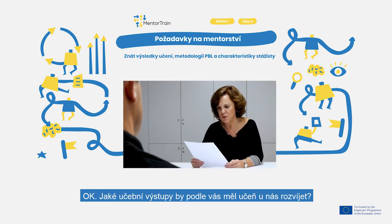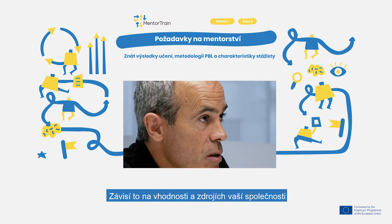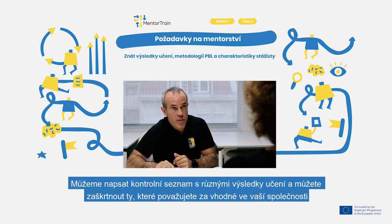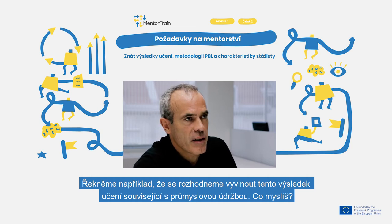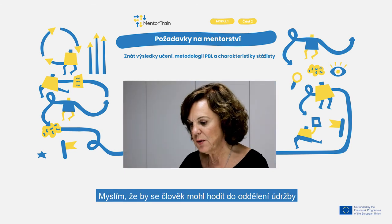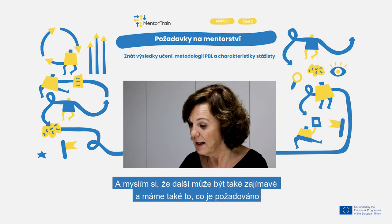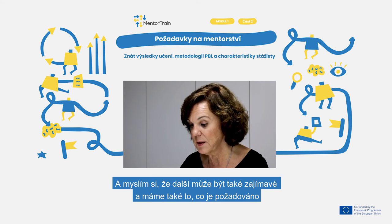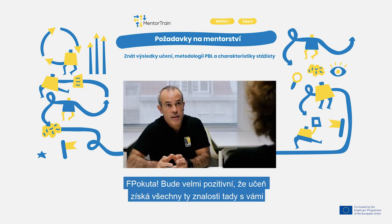According to that, which learning outcomes do you think the apprentice should develop with us? It depends on the suitability and resources of your company. We can write a checklist with the different learning outcomes and you can tick the ones you think fit better in your company. For example, we could develop this learning outcome related to industrial maintenance. I think that one could fit at the maintenance department — we have adequate structure and equipment for developing these activities. And the next one could also be interesting; we also have what is requested. Let's write that checklist you mentioned. It will be very positive for the apprentice to gain all that knowledge here.